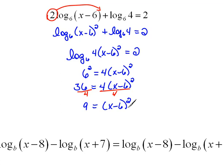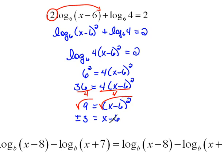To get x minus 6 alone, we take the square root of both sides to undo the square. The square root of 9 gives plus or minus 3, which equals x minus 6. We're running out of time for this video, so we will pick this back up in the next one.